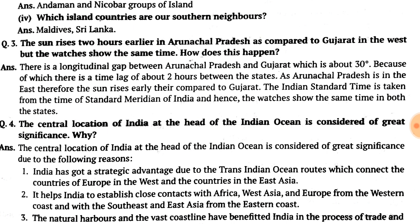The long question is: the sun rises two hours earlier in Arunachal Pradesh as compared to Gujarat in the west, but the watches show the same time — how does this happen? There is a longitudinal gap between Arunachal Pradesh and Gujarat of about 30 degrees. Because of this longitudinal gap, there is a time lag of two hours between the two states, as 15 degrees of longitude equals 1 hour.